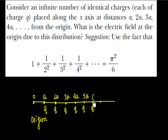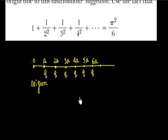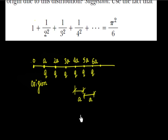Each q charge is separated by distance a. If you take any two adjacent charges, they are separated by distance a. Our task is to find out the electric field at the origin.